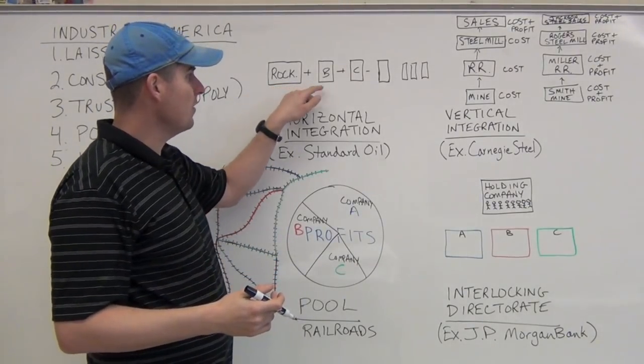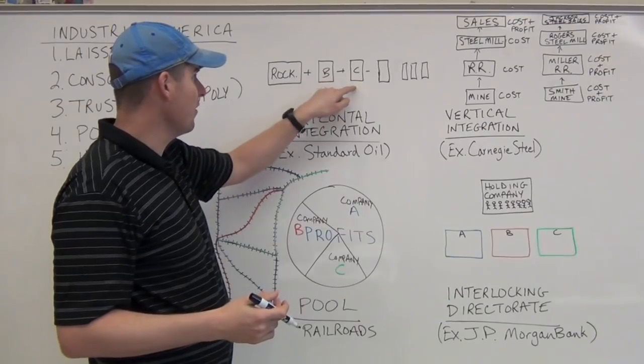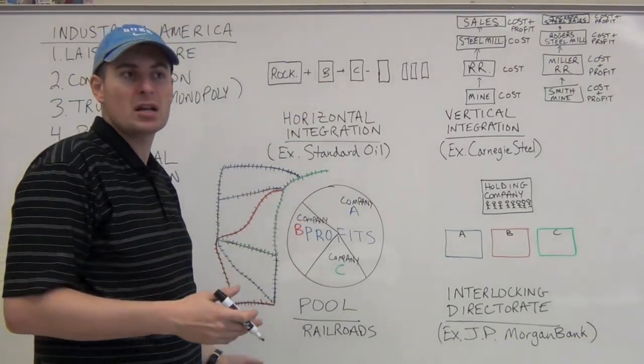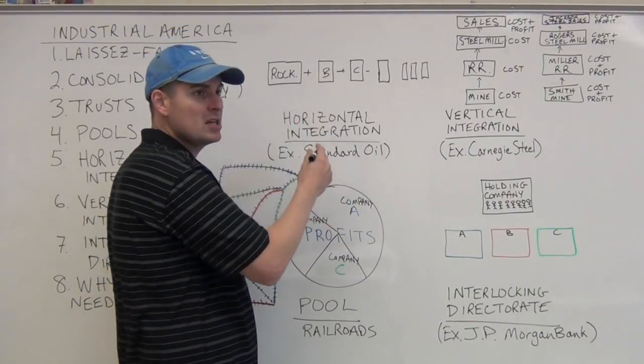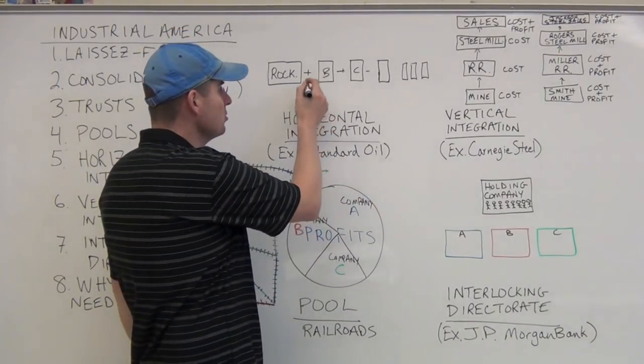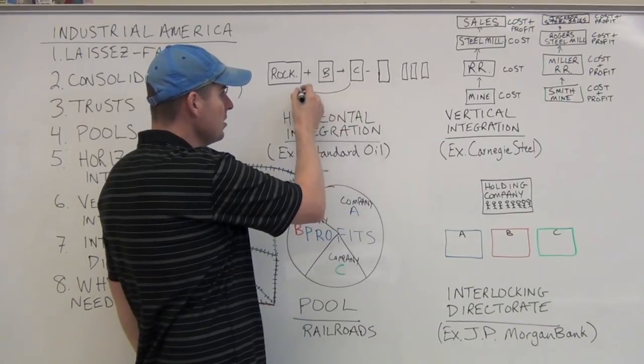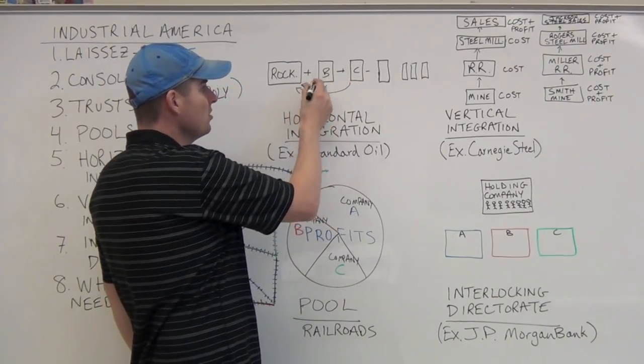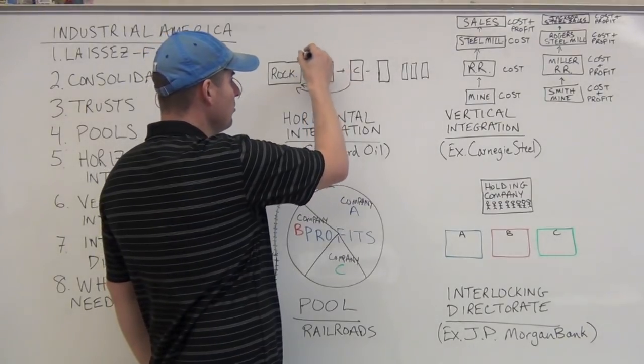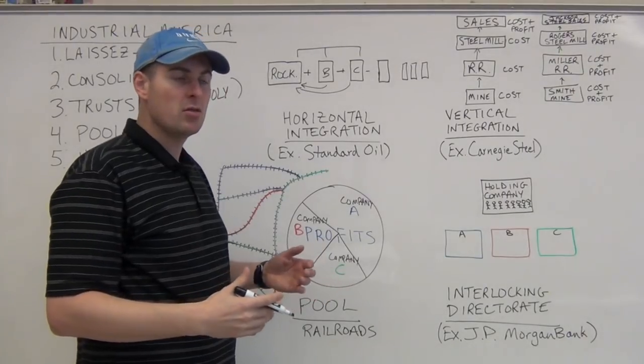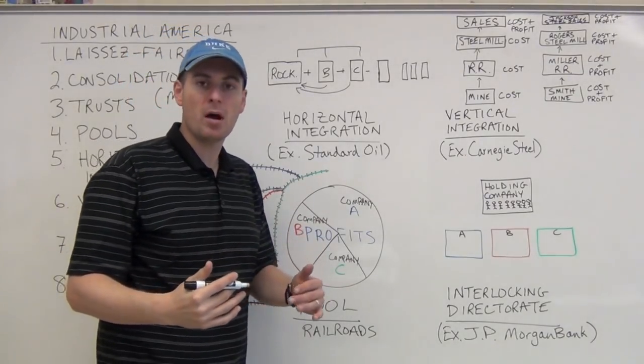What they're going to do is Rockefeller says, I will give you B and C—you guys will each have a 25% interest, and I'll have a 50% interest, or I'll have 60 and you'll each have 20, depending on whatever the proportion would be. You get shares of stock in my company, but then your company is absorbed, and so now you have one company.